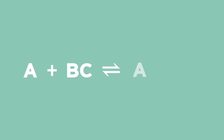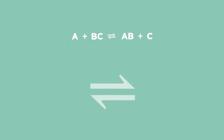A reversible reaction is a chemical reaction in which the product can be converted back to reactants under suitable conditions. A reversible reaction is shown by two arrows — a half arrow to the right and a half arrow to the left.